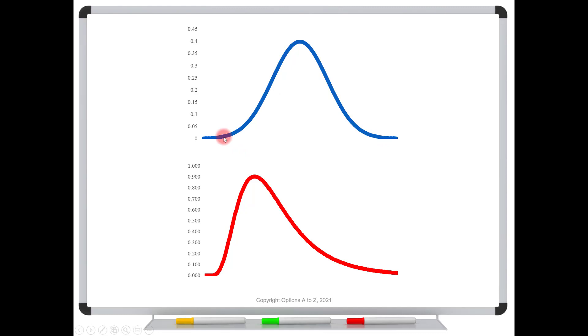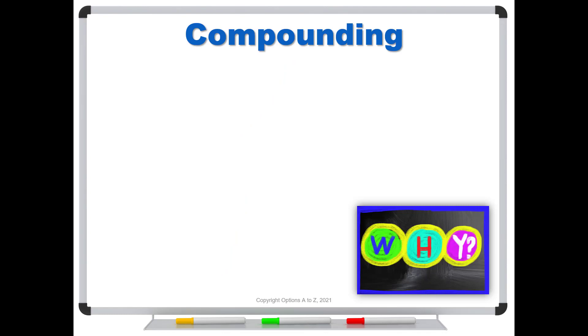Why is it that if we have stock price changes that look like this, a bell curve, that the stock prices themselves look like this? Well, the reason is actually pretty interesting and it's because of compounding.